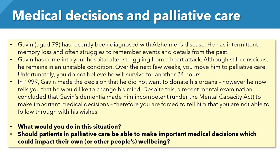For example, in this case, if Gavin did donate his organs, that could save another person's life. However, in the real-life scenario, you would be forced to tell him that you are not able to follow through with his wishes, regardless of what the outcome could be, because the Mental Capacity Act judges whether a person's condition limits them from making an informed decision — and in this case that would be so.